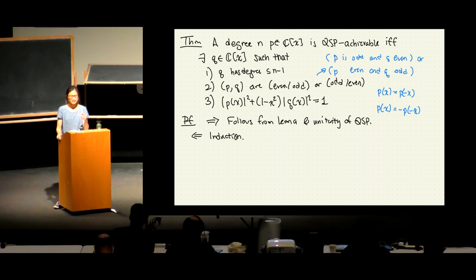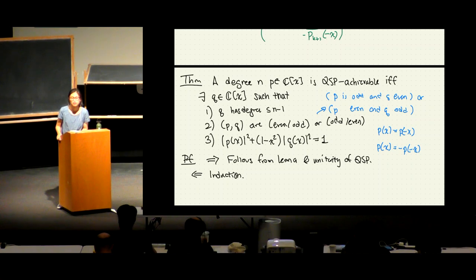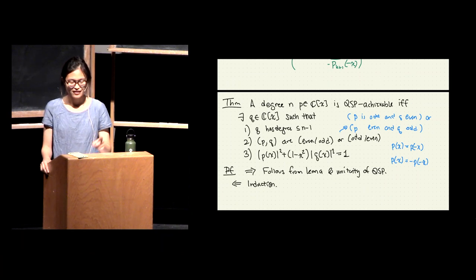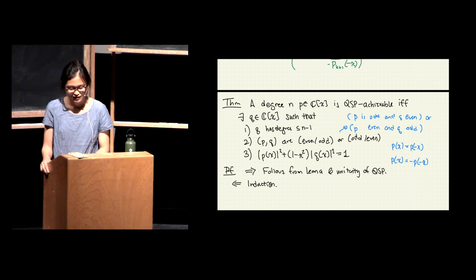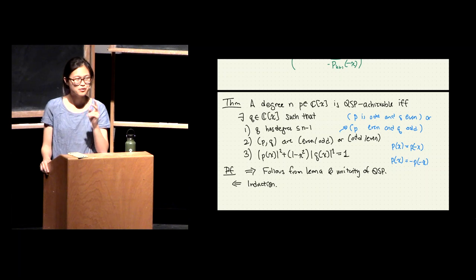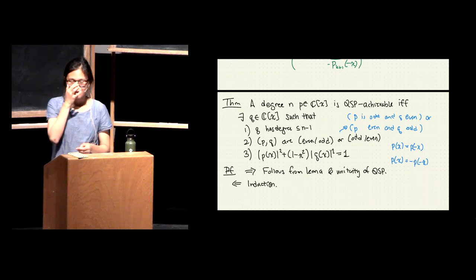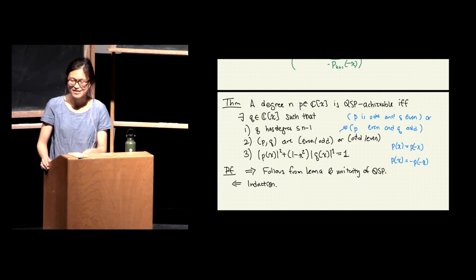The recursion occurs every time I do my reflection operator and then my rotation operator. Regarding the relationship between QSP achievable and block encoding achievable: what I did was define this notion of achievability — if a polynomial is achievable, I can get from a block encoding of A to a block encoding of P(A). I constrained this to look at scalar cases: two-by-twos with the top left being a scalar. I'm looking at a subclass — which polynomials are achievable with these particular kinds of circuits.